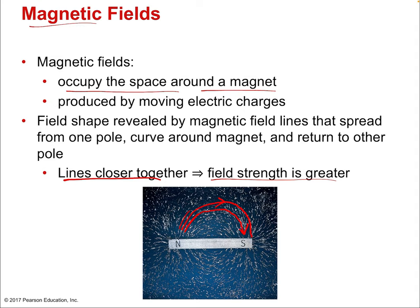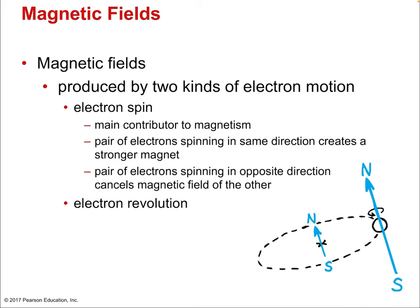The field lines always point from north to south — that's the direction of the magnetic field lines. That's also the direction a magnet would feel if placed in that field. It would line itself up; if you took another magnet and put it there, its north pole would line up with the field lines, or a compass would as well, and it would point towards the south pole.